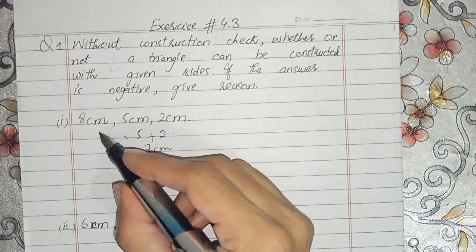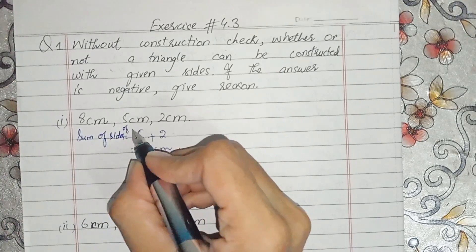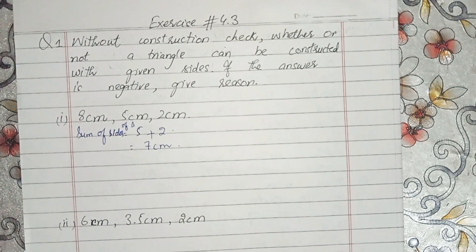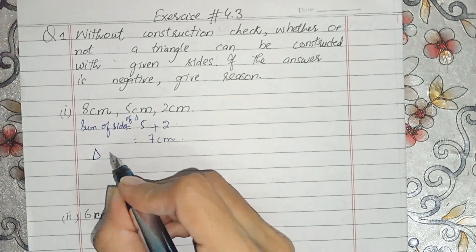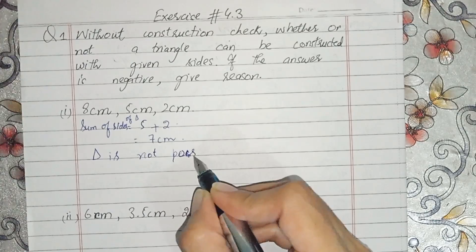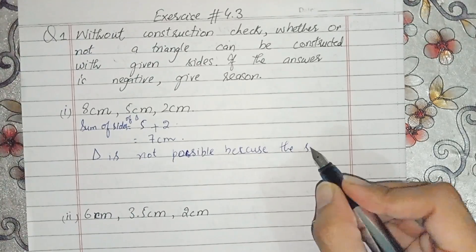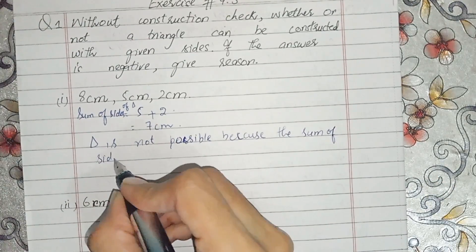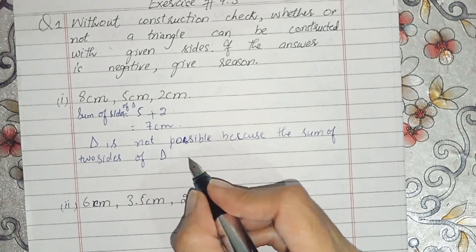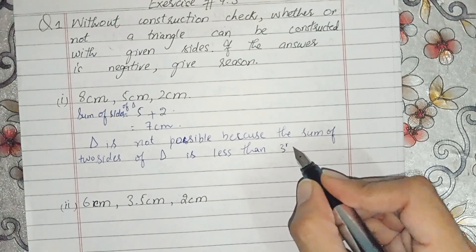The third side is 8 cm. This is the sum of the two sides of the triangle. The sum is 7 cm and the third side is 8 cm. So the sum of two sides of the triangle is less than the third side.